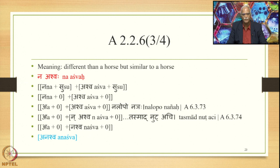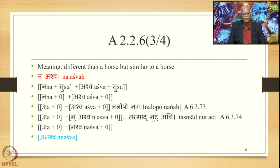By Tasmanut Achi (6.3.74), Na is added to Ashwa in the initial position, giving A + Nashwa. Joining them together we get the form Anashwa. This happens when the Uttarapada begins with a vowel. In the previous example, the Uttarapada was Brahmana beginning with a consonant, so Tasmanut Achi did not apply there. But when the Uttarapada is Ashwa beginning with a consonant — wait, Ashwa begins with a vowel — Tasmanut Achi applies and we get Anashwa.